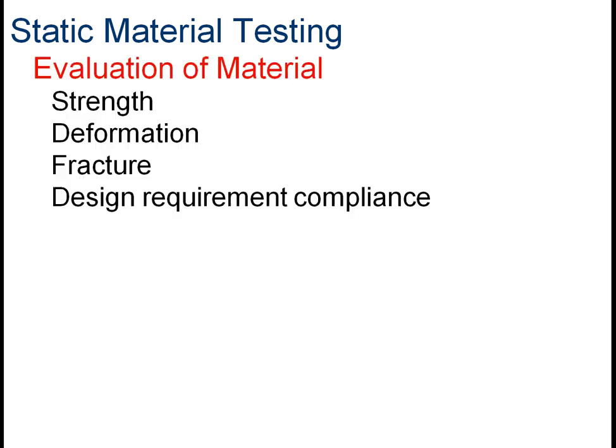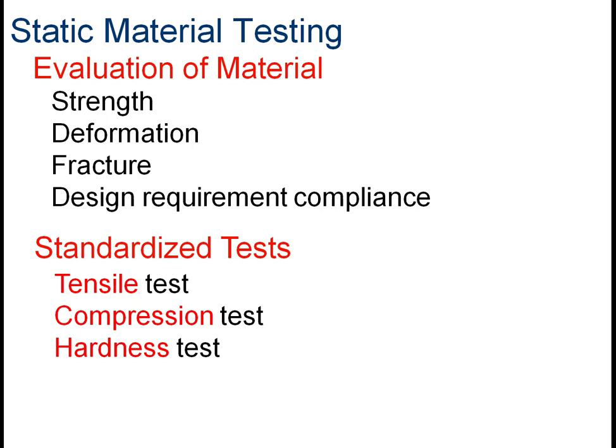When we do static material testing, which is what we will do in this class, we're evaluating material properties. Four properties we can look at are strength, deformation, fracture, and whether the material meets our design requirements — is it strong enough to hold the proposed load? Standardized tests include a tensile test where we put the material in tension, a compression test where we put it under compression, and a hardness test. Our focus today is mostly on the tensile test.